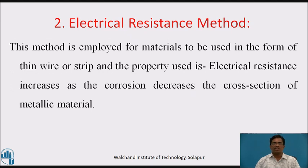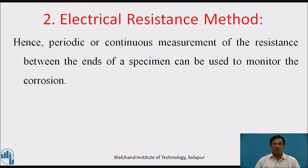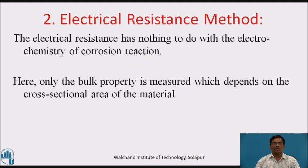Second method: electrical resistance method. This method is employed for materials to be used in the form of thin wire or strip. The property used is that electrical resistance increases as corrosion decreases the cross-section of metallic material. Hence, periodic or continuous measurement of the resistance between the ends of a specimen can be used to monitor the corrosion. The electrical resistance has nothing to do with the electrochemistry of a corrosion reaction; only the bulk property is measured, which depends on the cross-sectional area of the material.